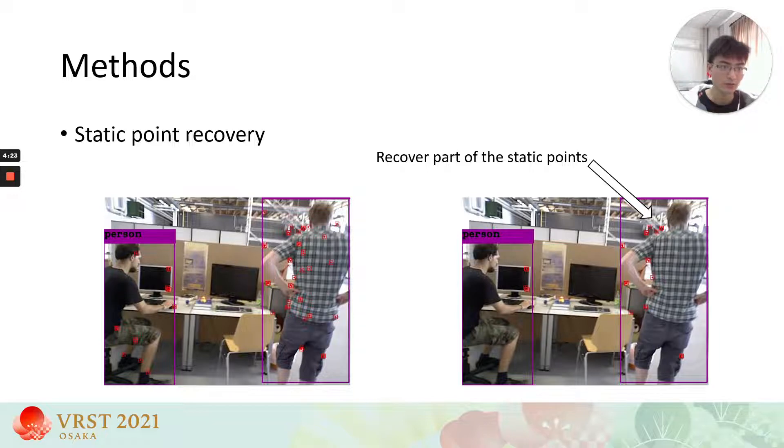Since removing all the feature points in the bounding box may cause tracking failure, especially in the object detection branch, we propose a geometric technique called static point recovery, SPR, to recover part of the static points in the bounding box to enhance the system robustness. Left figure uses the results of bounding box to remove feature points. Right figure uses SPR technique to recover part of the static points.